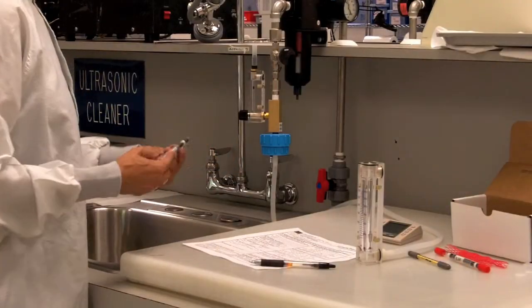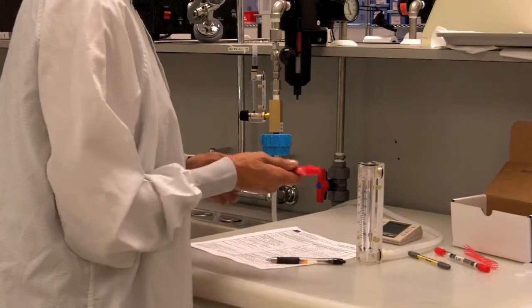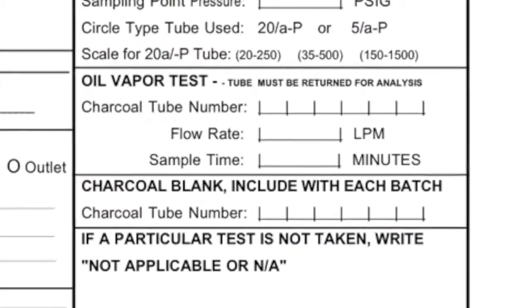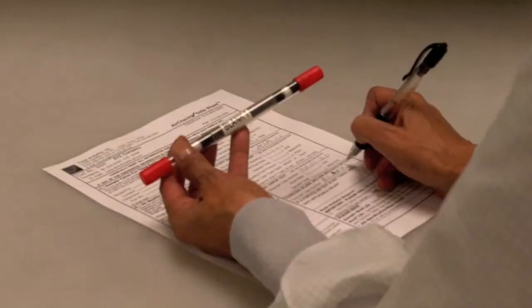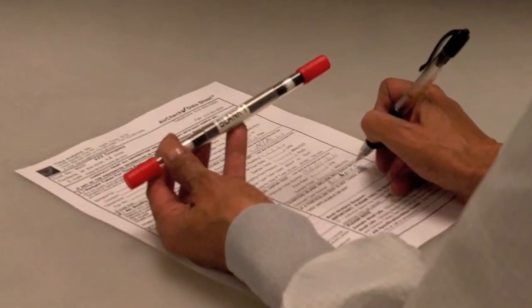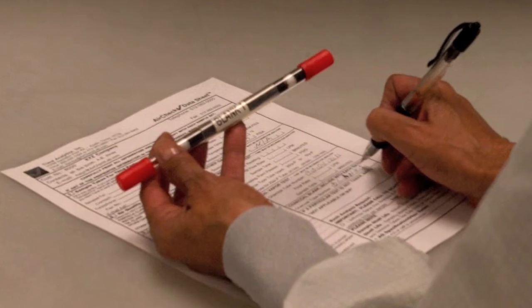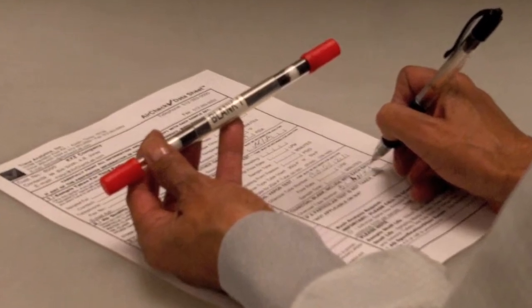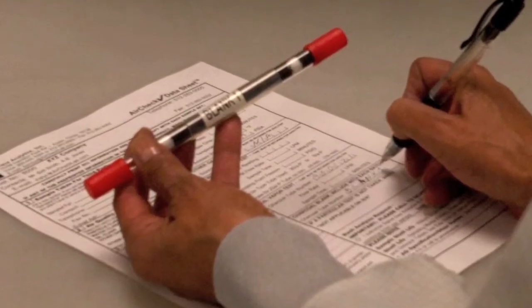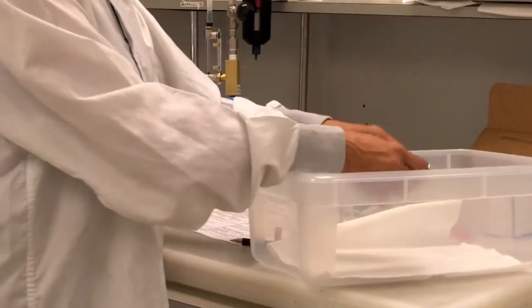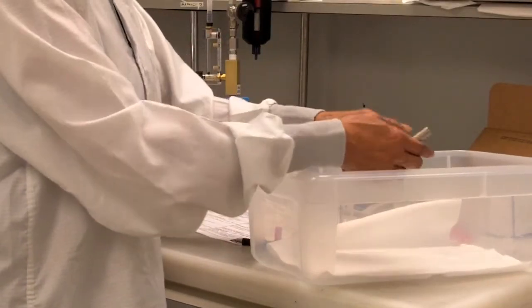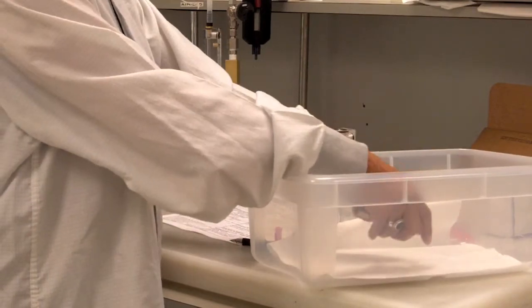At the end of the sampling time, remove the tube, cap both ends of the oil vapor tube, apply the netting, and place the tube in the pre-addressed return mailer. Record the flow rate and sampling time on the datasheet. Only one blank needs to be submitted per batch of samples taken on any given day. Simply break both tips off an oil vapor tube marked blank, cap both ends, note on the datasheet, and place in the return mailer.